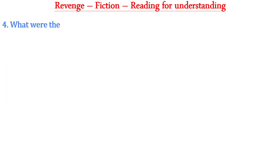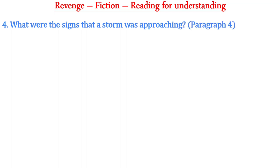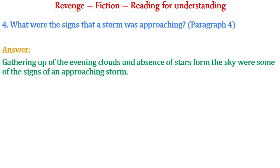Question four: What were the signs that a storm was approaching? This question is from paragraph four. The answer is: the gathering of evening clouds and the absence of stars from the sky were some of the signs of an approaching storm.